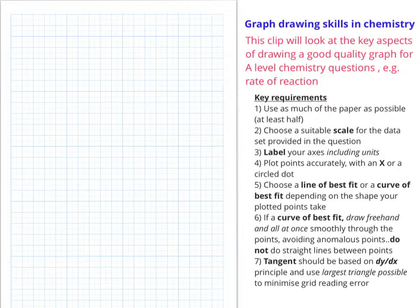If you have to do a line of best fit, straight, then you use a ruler, or if your shape suggests that you've got a curve, you use a curve of best fit. If you have to do this, you need to do a nice smooth curve through the points, avoiding any anomalous points that you might come across, and don't do straight lines between the points because you'll lose marks for this.